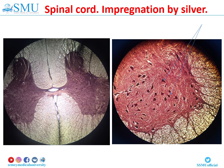Here you can see some examples of staining of histological preparations. In this slide, you see a section of spinal cord impregnated by silver. In low magnification, gray matter of the spinal cord is visible, like a butterfly or letter H. In high magnification, neurons are visible. They are stained into dark brown color due to the presence of neurofibrils in their neuroplasm.